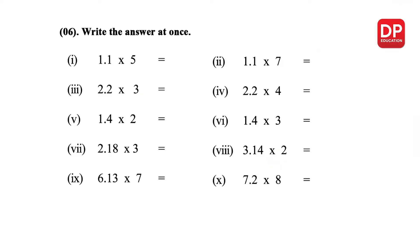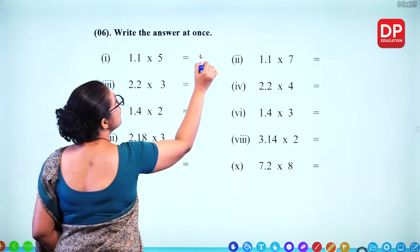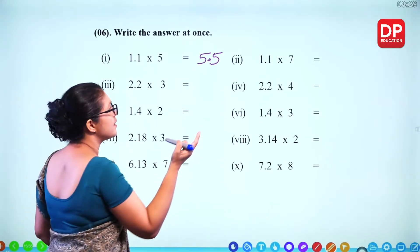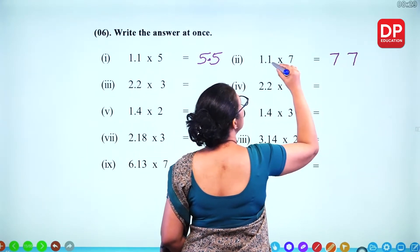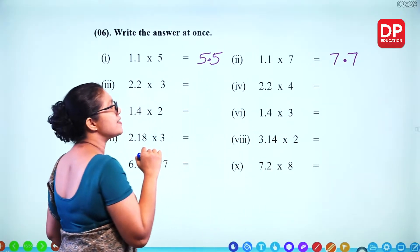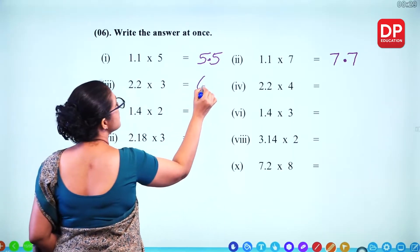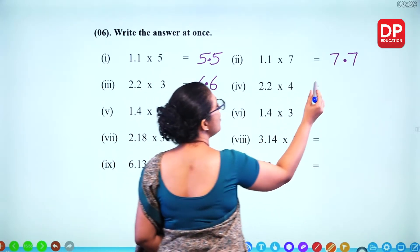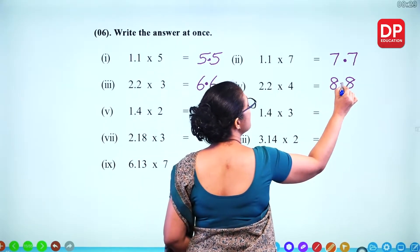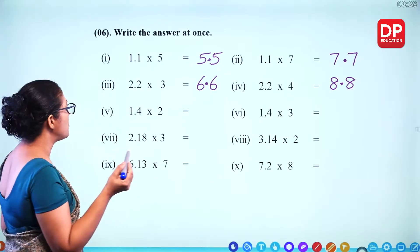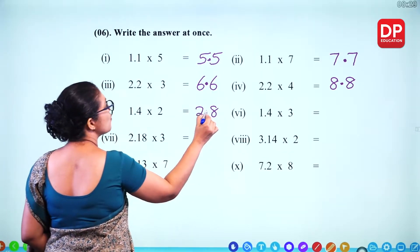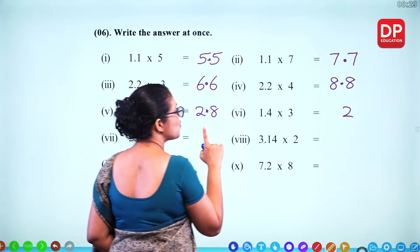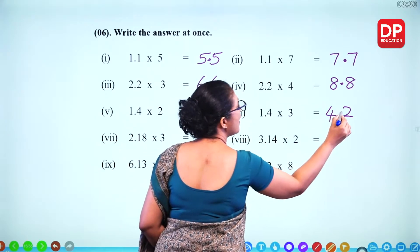More examples: 1.1 times 5 = 5.5 (1 decimal place); 1.1 times 7 = 7.7 (1 decimal place); 2.2 times 3 = 6.6; 2.2 times 4 = 8.8; 1.4 times 2 — 14 times 2 is 28, with 1 decimal place gives 2.8; 1.4 times 3 — 14 times 3 is 42, with 1 decimal place gives 4.2.